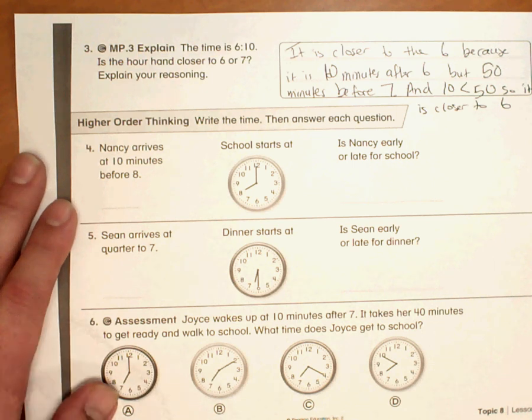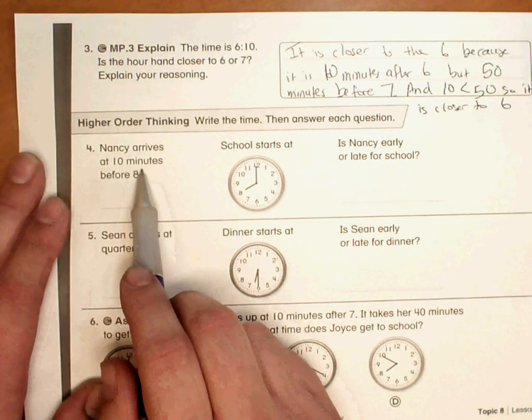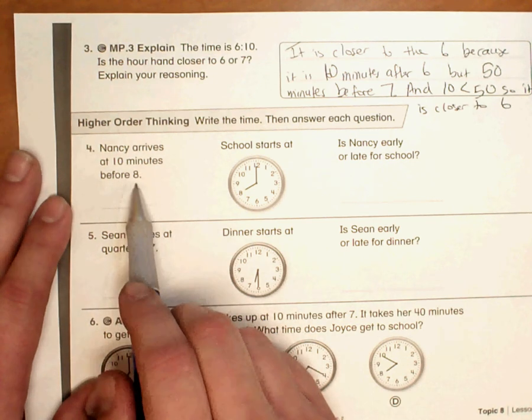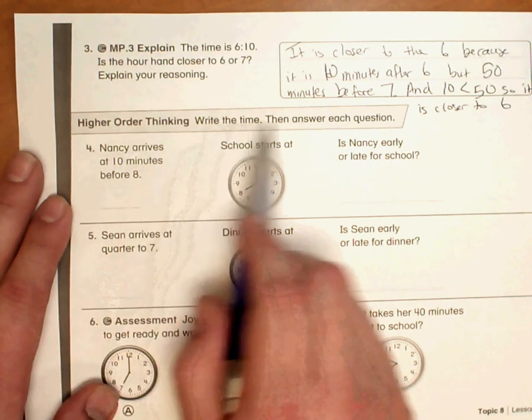Number 4 on homework 8-7. Nancy arrives at 10 minutes before 8. It says write the time, then answer the question.